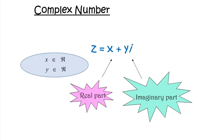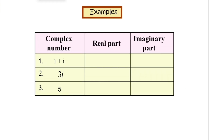A complex number can be written in Cartesian form: z = x + yi, where both x and y are real numbers. x is known as the real part, and y is known as the imaginary part. For example, for 1 + i: real part is 1, imaginary part is 1. For 3i: real part is 0, imaginary part is 3. For 5: real part is 5, imaginary part is 0.